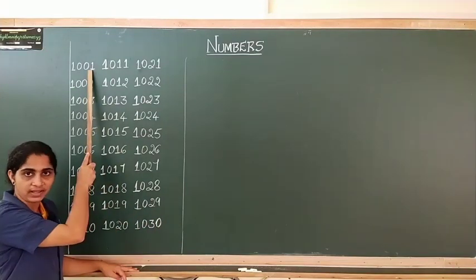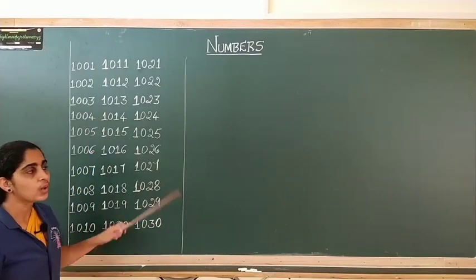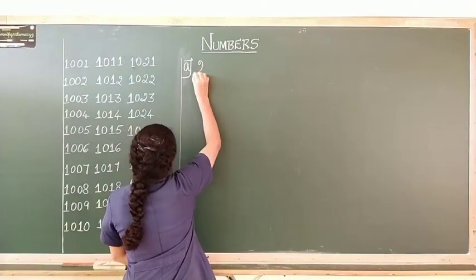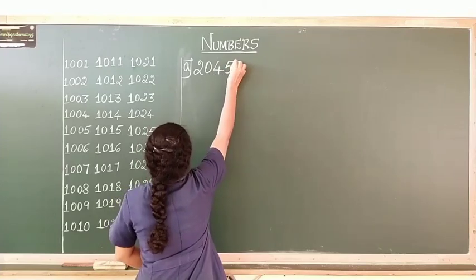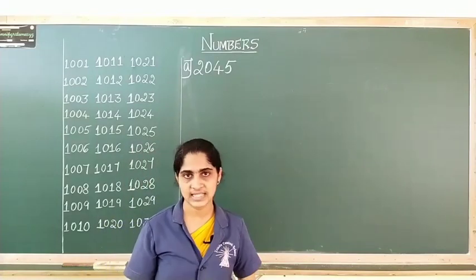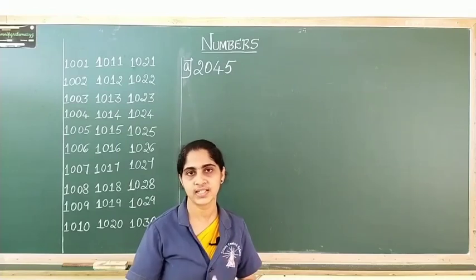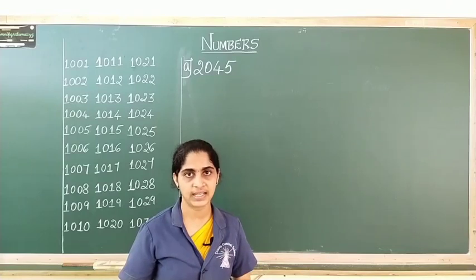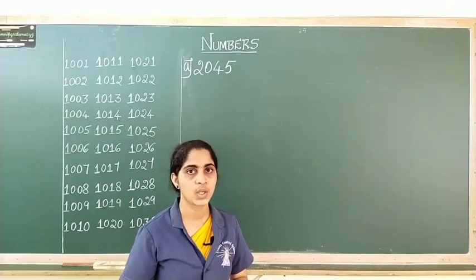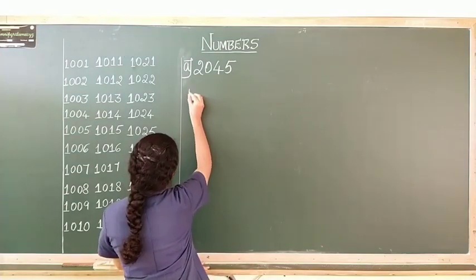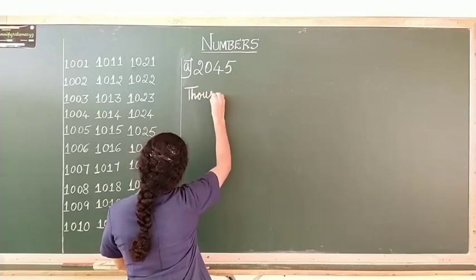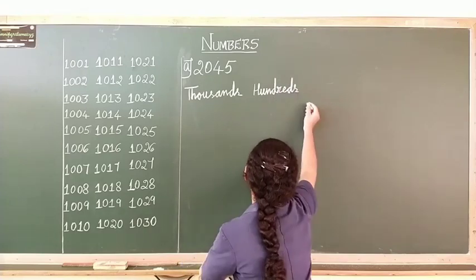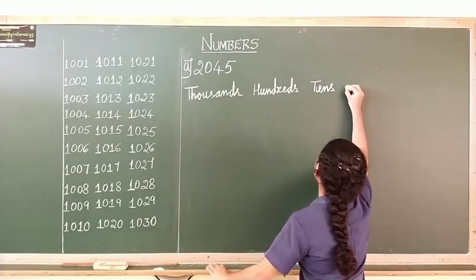Now you know how to read the numbers from 1,001 to 1,030. Now let us practice reading some more numbers. Let us take the first example. You know that whenever there are 4 digits, there must be 4 places. Which are those places? Yes — thousands place, hundreds place, tens place, and ones place. So let us write those places first: thousands, hundreds, tens, and ones.